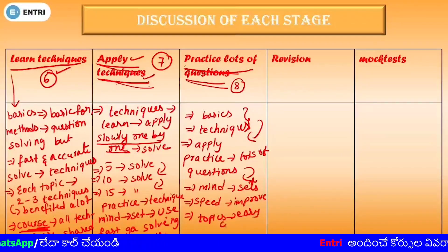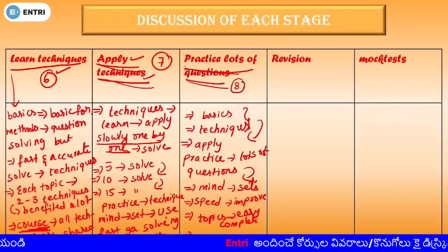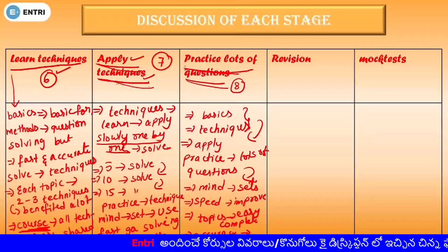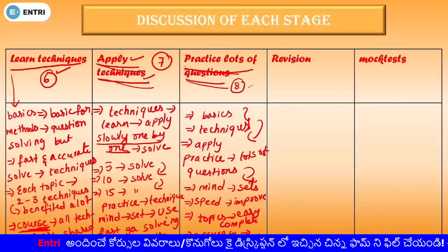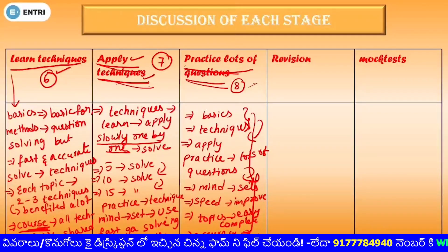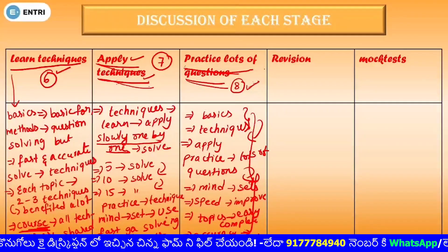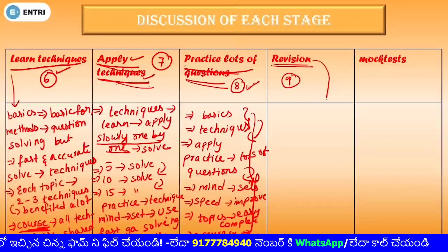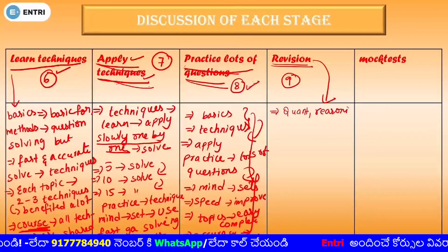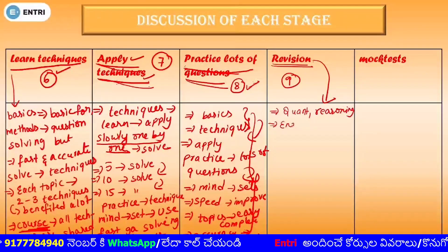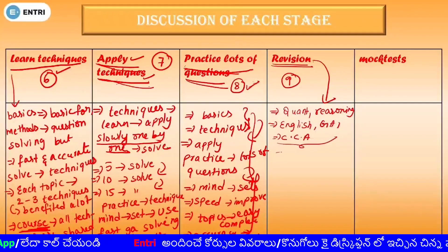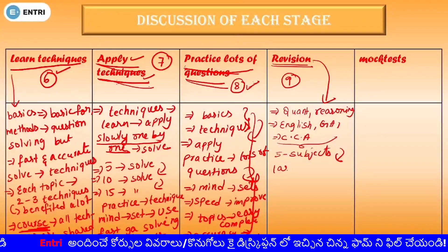You can set the speed and improvement. You can do it accurately and easily. Next, we will do revision. Once you have covered quantitative aptitude, reasoning, English language, general awareness, and credit cooperative awareness — these five subjects and their related topics — you will have completed the last eight steps and completed the preparation.